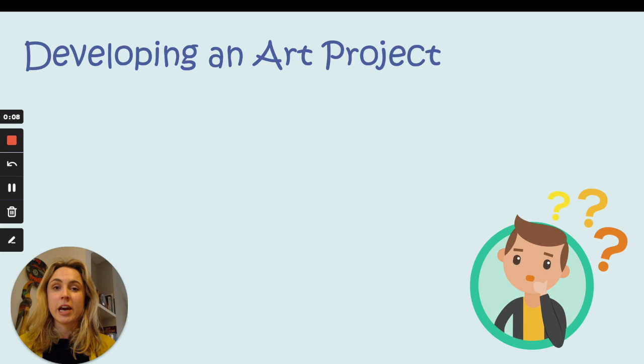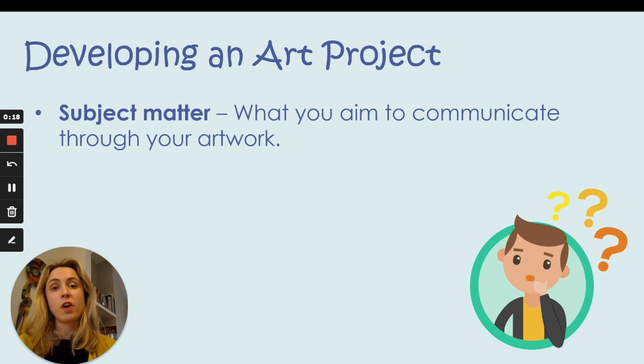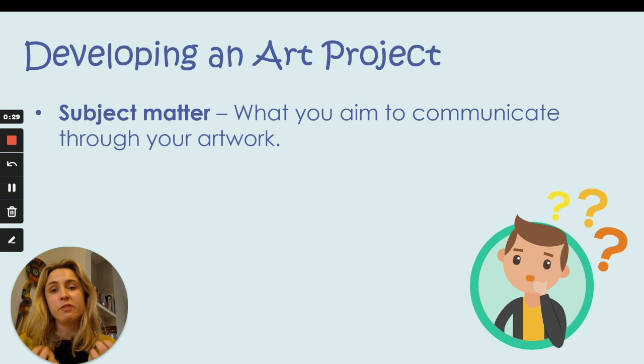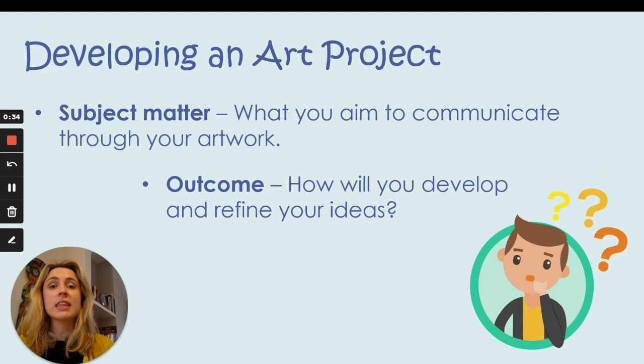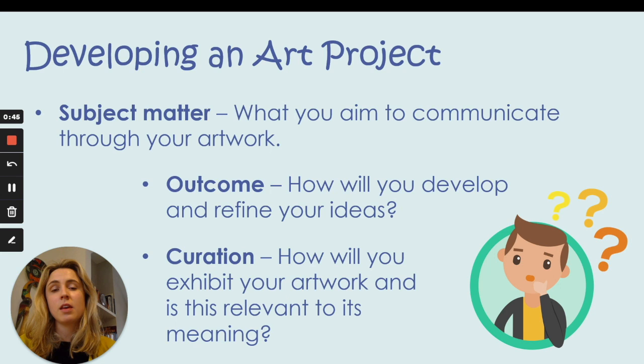When developing an art project there are lots of things you need to think about. Today we are going to focus on three of those things. The first focus will be subject matter — that means what you aim to communicate through your artwork and how you want viewers to feel when they see your work. The second thing is outcome: how you will develop and refine your ideas to get the best outcome. And lastly we're going to look at curation — how you will exhibit your artwork and whether or not this is relevant to its subject matter.